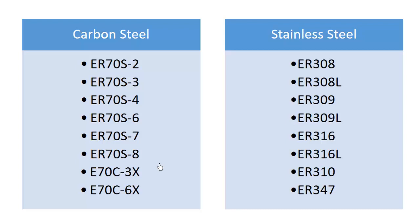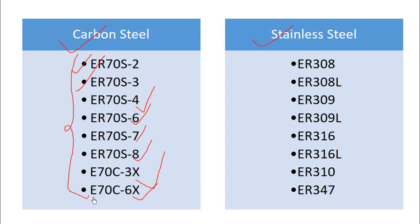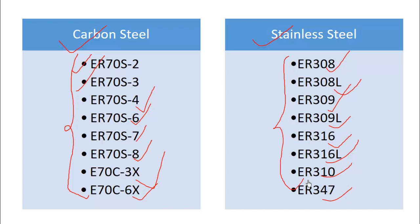We'll talk about filler metals made of carbon steel and stainless steel, as these two categories are very widely used in industry. In carbon steel, you will see ER70S-2, 70S-3, 70S-4, 70S-6, 70S-7, 70S-8, E70C-3X, and E70C-6X. In stainless steel, you will see ER308, ER308L, ER309, ER309L, ER316, ER310, and ER347. We'll learn about the nomenclature, usefulness, and significance of these electrodes.